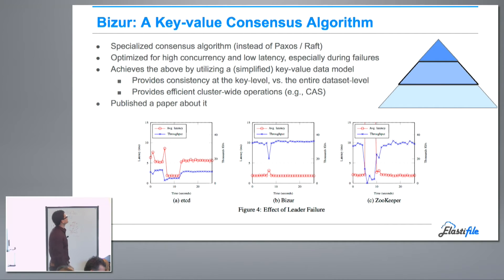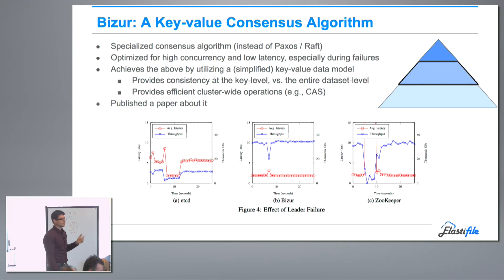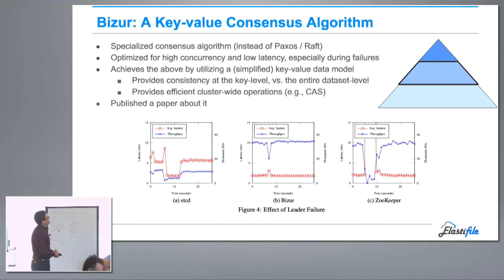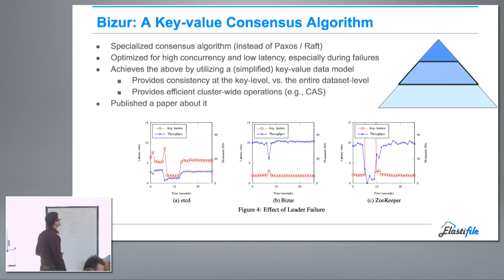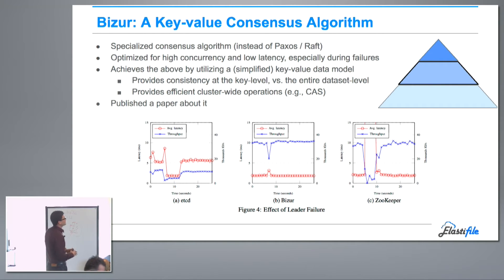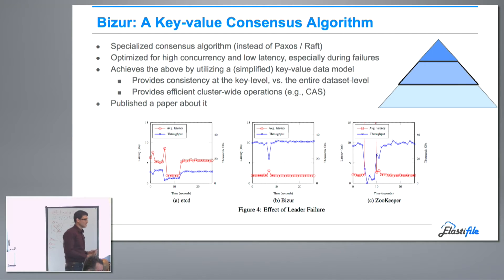By limiting the constraints on what kind of consistency we need to reach, we can achieve much better performance. Bizur is fine-tuned for file system or metadata file systems. We've published a paper on it that's available online. It's not open source, but you can read the paper. It also supports special efficient cluster-wide operations like compare-and-swap, which help us get this nice performance.